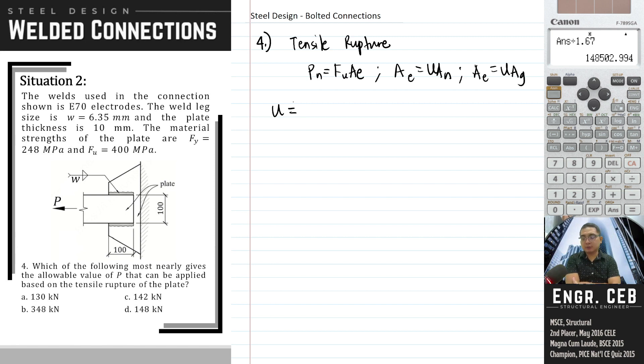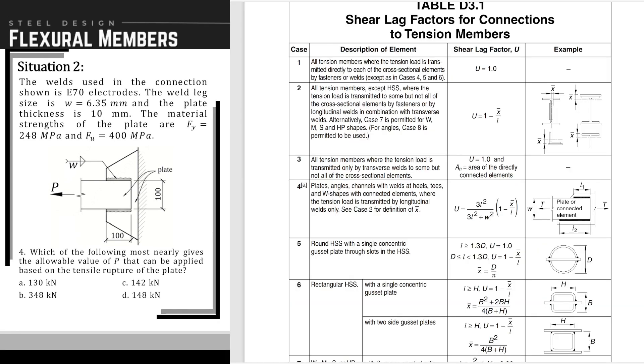The formula for the shear duct factor to be used is Case 4: plates, angles, channels with welds at heels, tees, and double shapes with connected elements where the tension load is transmitted by longitudinal welds only, like our problem. This is the shear duct factor to be used.